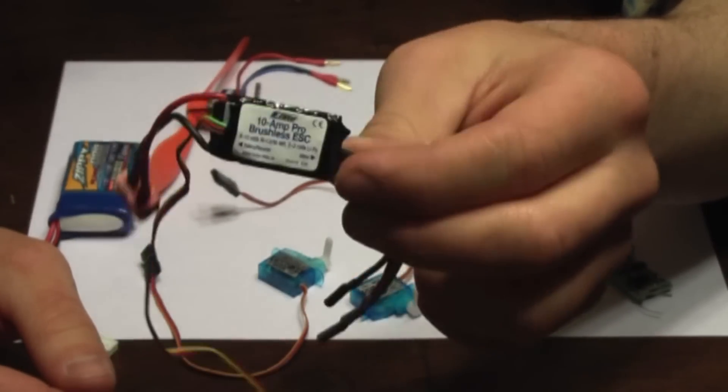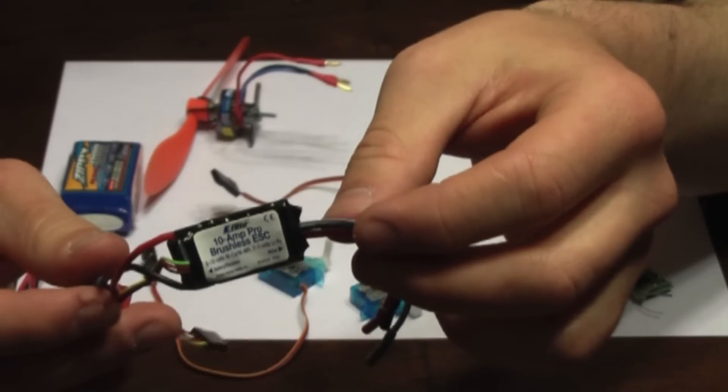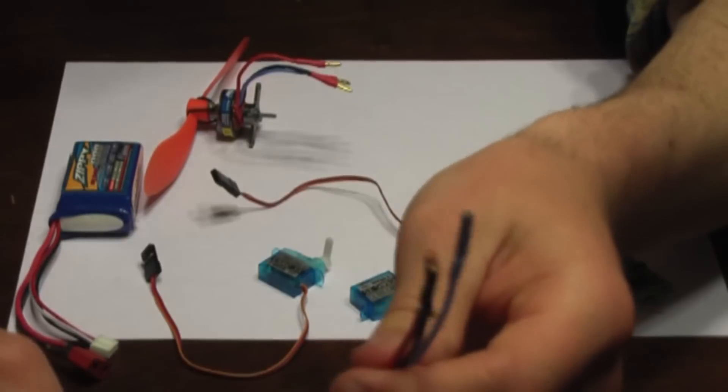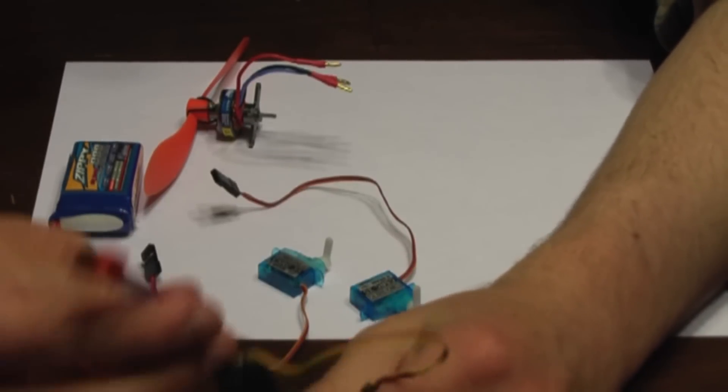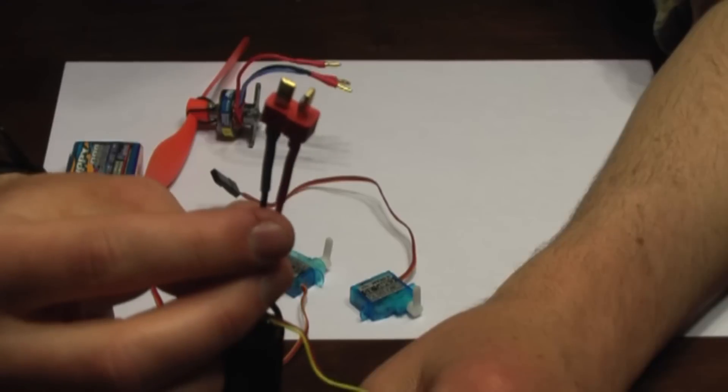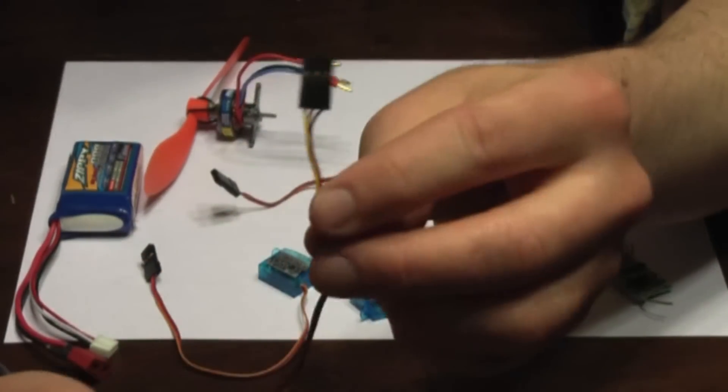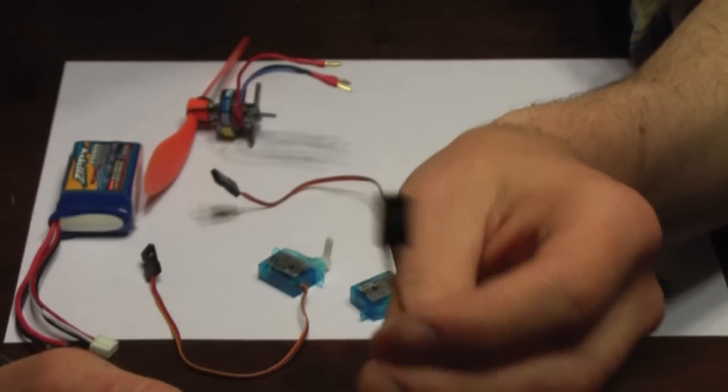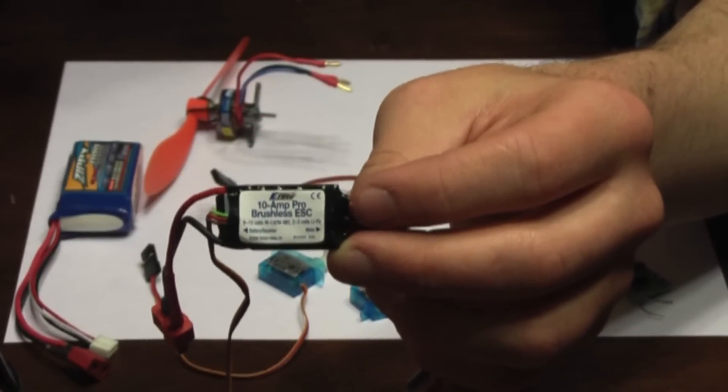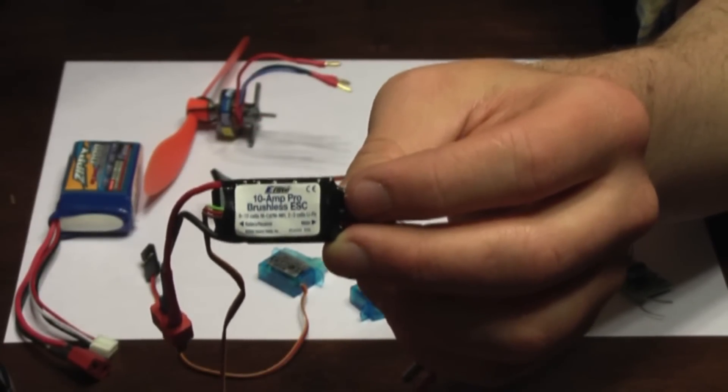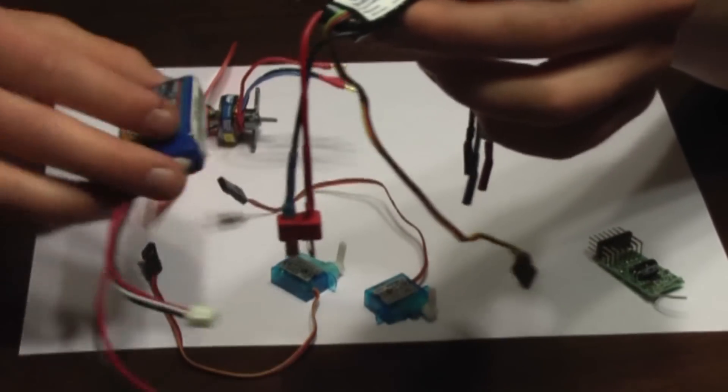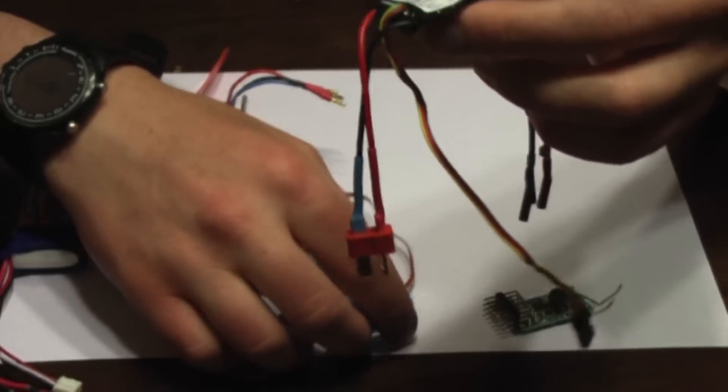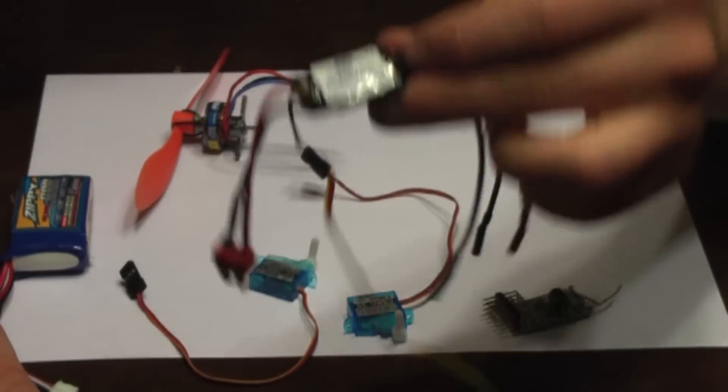Now we've got an ESC or speed controller. ESC stands for electronic speed controller. This is what's going to control your motor. It's also going to receive the voltage from the battery and relay it to the motor, and it's going to hook into the receiver to get the throttle inputs. It also has, most ESCs nowadays have something called the BEC in them, which stands for battery eliminating circuit. So it's going to take the raw voltage from your battery and step it down to whatever your receiver needs. So basically it's powering the receiver, which in turn powers the servos.